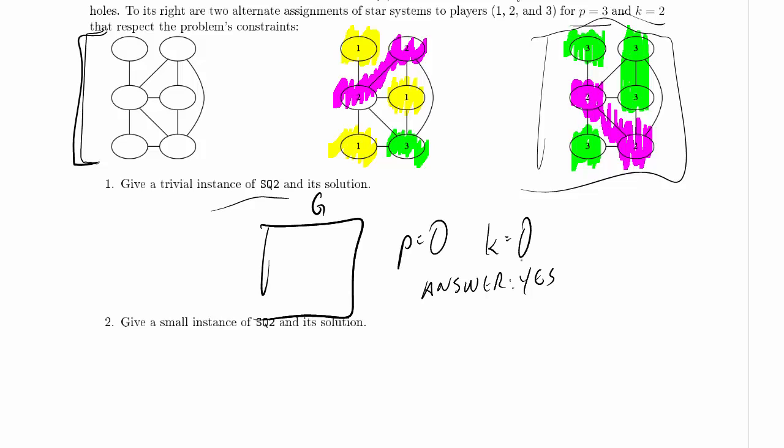Now we're supposed to give a small instance of SQ2 and its solution. We could give a one node instance, but that's going to be trivial too. Let's at least give something that requires a tiny bit of thought. So how about two nodes? This is our graph. And the number of players is equal to two, and K is equal to one. And the answer in this case is yes. And why is the answer yes? Because you can color this star system yellow for player one. And then I won't use our dreaded pink. Oh, yes, I will. And then you're forced to color the other star system pink. But having done so, you've then got a legitimate solution. So it at least requires figuring something out.